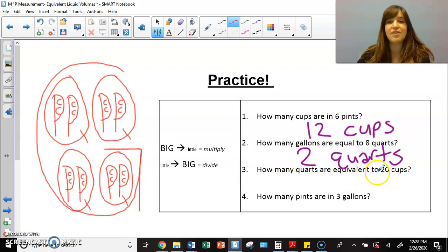four. Then it's asking how many quarts are equivalent to 20 cups. Well, there are not 20 cups pictured on here. There are 16. So I could go ahead and I could draw my additional cups and I could count that up, or I could use my system over here of big to little, I multiply or little to big, I divide. So if I have 20 cups, and I see in my picture that there are one, two, three, four cups in a quart, which is what it's asking me, I would take the number 20. And because I'm going from small to big, I'm going to divide. I would take 20 divided by four and 20 divided by four is equal to five.